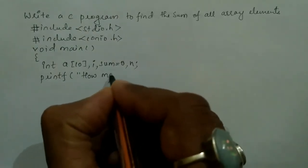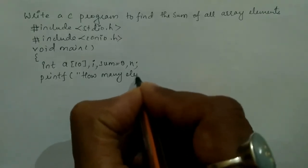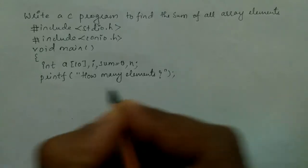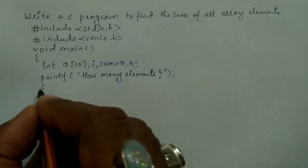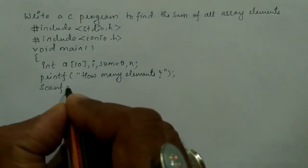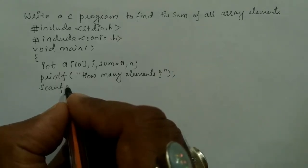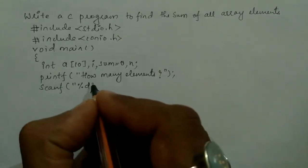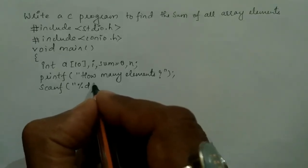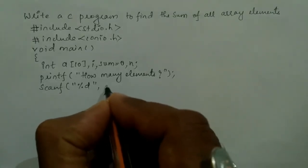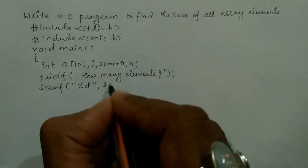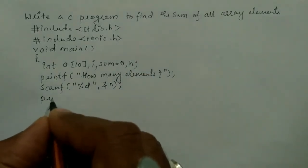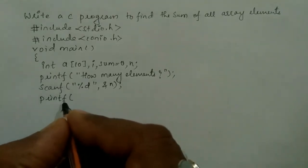Now we will write a printf statement asking the user how many elements, end the double quotation mark, put semicolon. We receive the value from the user through the keyboard using scanf with format specifier %d and ampersand n, then put semicolon.